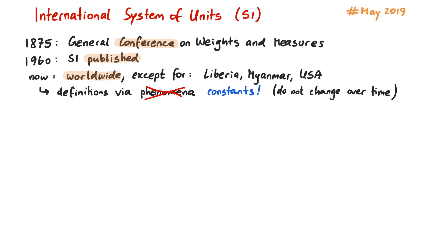Defining a measure like this works by assigning a fixed value to a constant. Instead of defining the second as a fraction of a day and then measuring the transition time between two energy levels of a cesium atom, we go the other way. We know this transition time does not change, so we assign it an exact value of so and so many seconds, and this in turn defines how much one second really is.